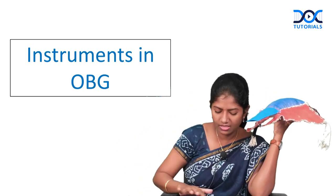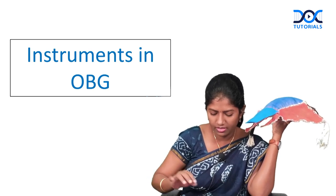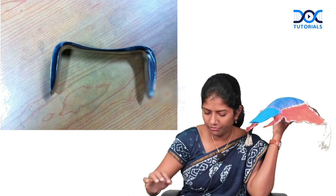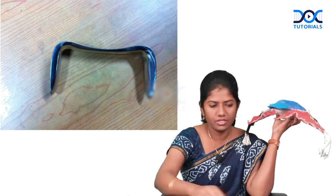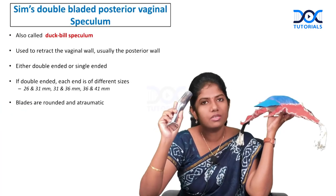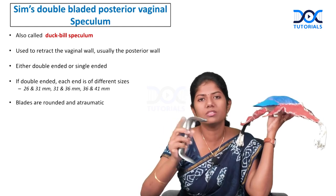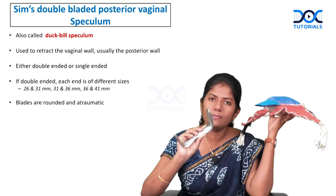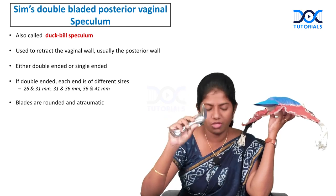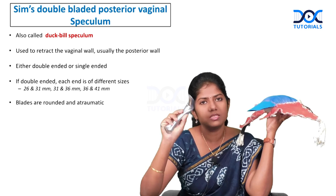The first instrument for today is the Sims double-bladed posterior vaginal wall speculum, also called the duckbill speculum. Its full name is Sims double-bladed non-self-retaining posterior vaginal wall speculum.